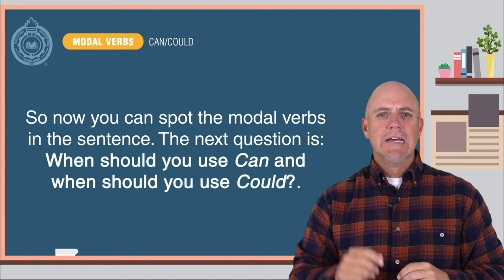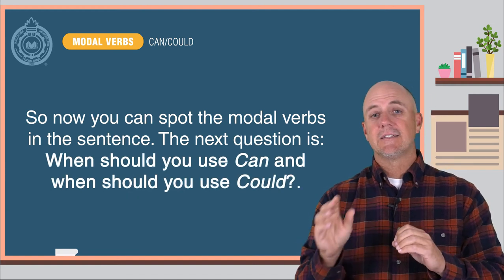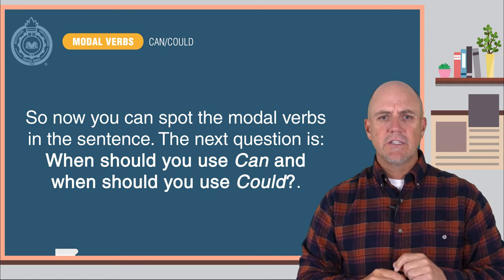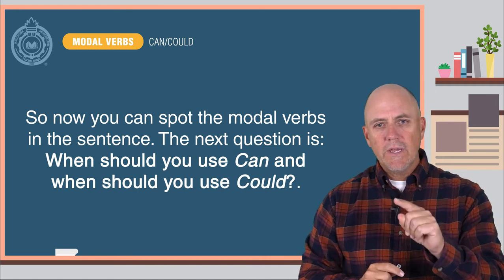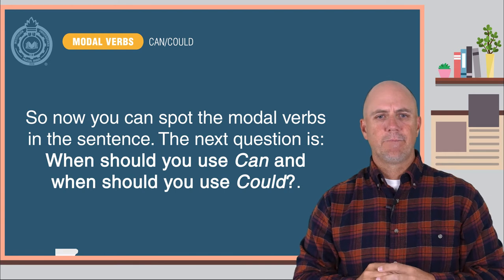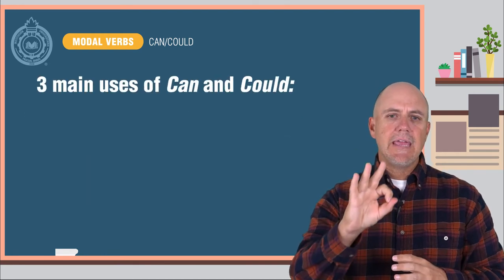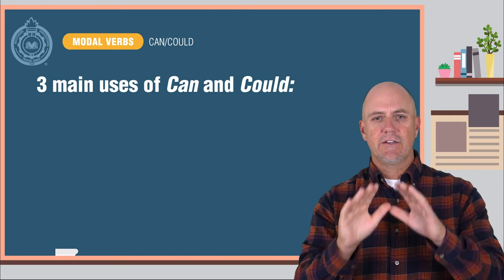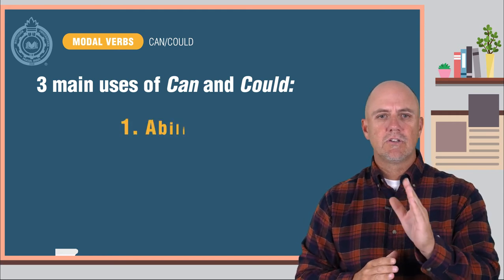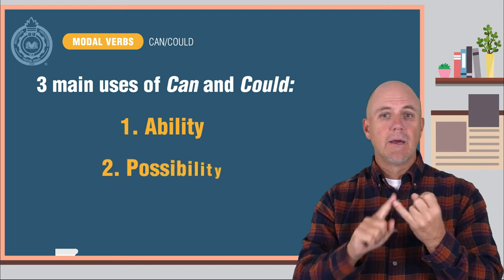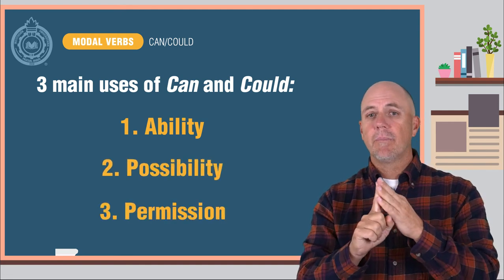Okay, so now that you can spot the modal verbs in the sentence, the next question is: when should you use can and when should you use could? First of all, let's look at the three main uses of can and could. We use can and/or could to refer to ability, possibility, and/or permission.